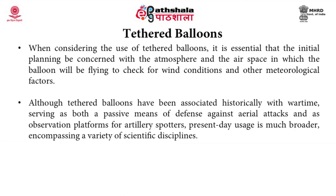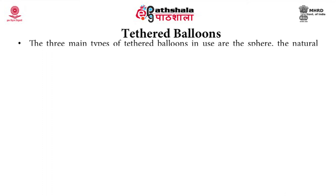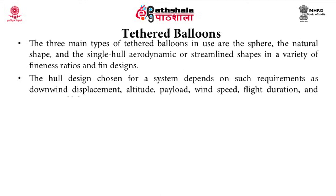Although tethered balloons have been associated historically with wartime — serving as passive defense against aerial attacks and as observation platforms for artillery spotters — present-day usage is much broader, encompassing a variety of scientific disciplines. They are used to carry aloft various sensors, meteorological measuring equipment, communication relays, and antennas. The three main types of tethered balloons are sphere, natural shape, and single-hull aerodynamic or streamlined shapes in a variety of fineness ratios and fin designs. Hull design depends on requirements such as downwind displacement, altitude, payload, wind speed, flight duration, and anticipated life.